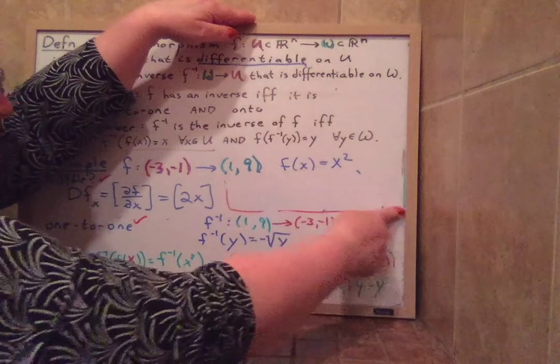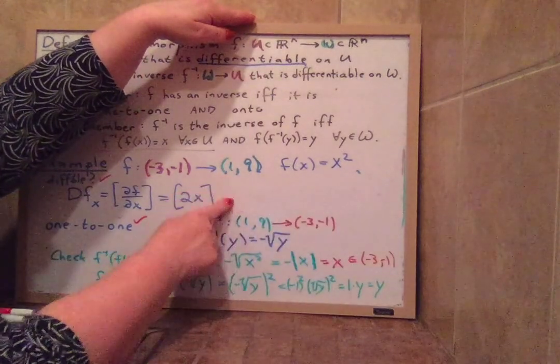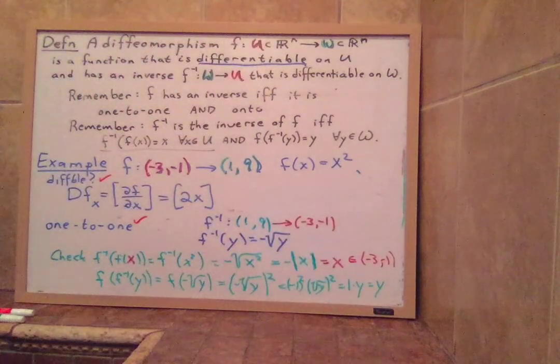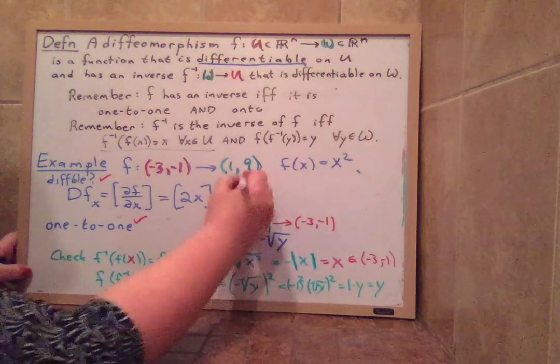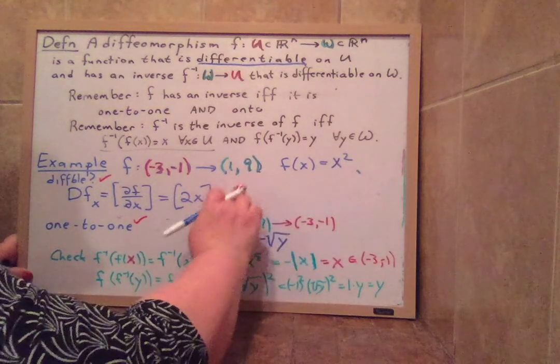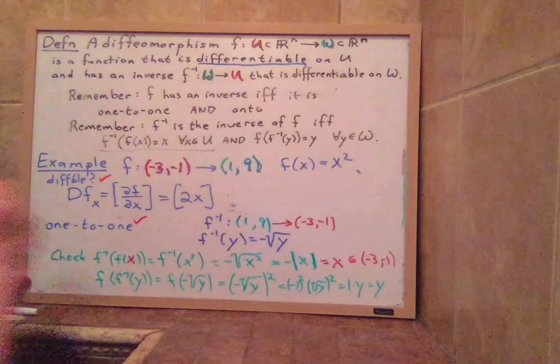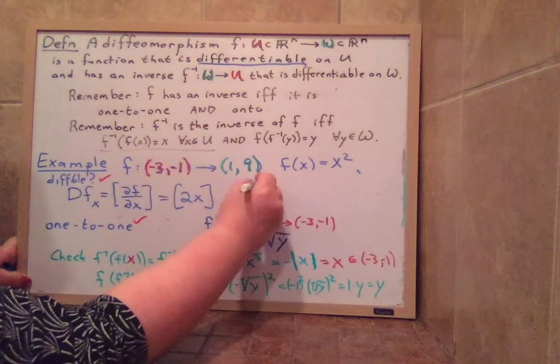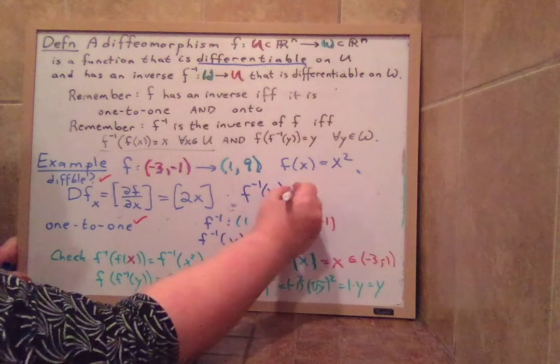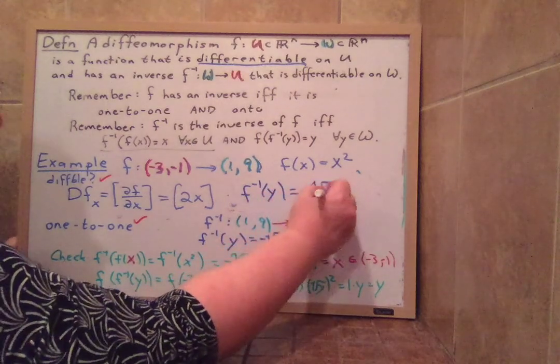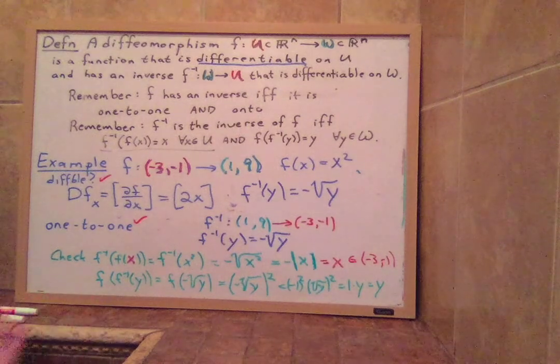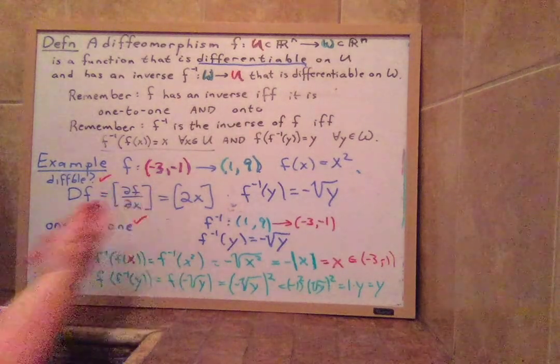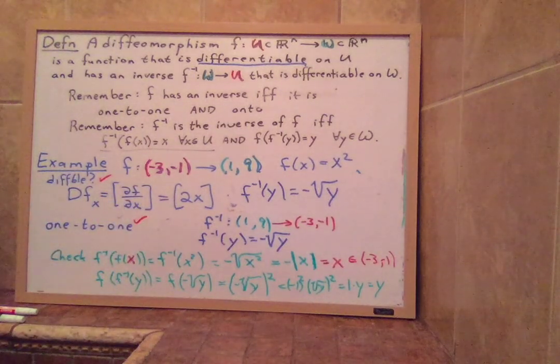We've already checked it. So I can certainly put it over here on the board. Sorry, everything is so cramped. But this is because we're stuck doing these virtual meetings. F, we have F inverse of y equals negative square root of y. That's how our F inverse is. And I can erase all the stuff below in which we figured out what F inverse was, because we have one more thing to check.